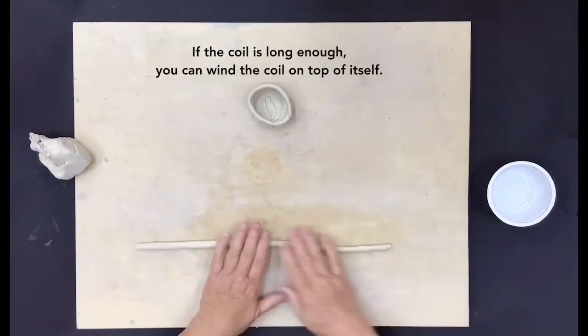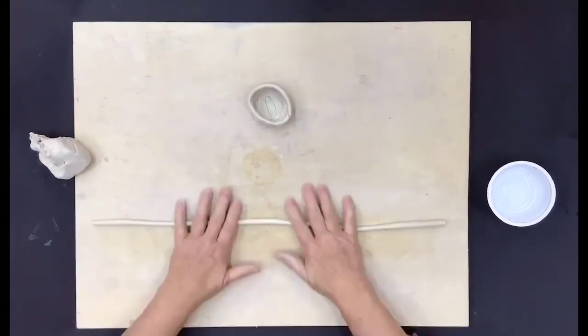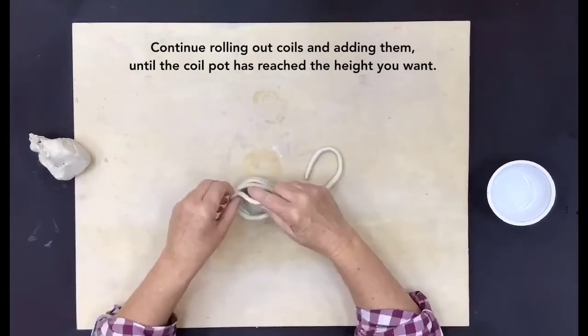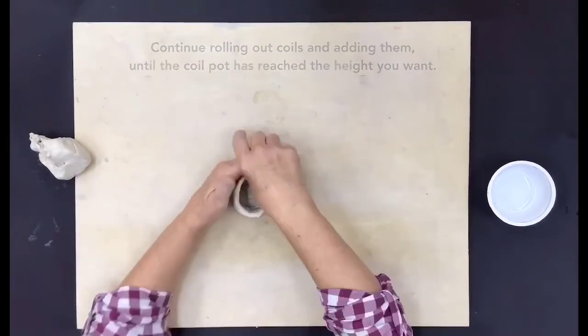If the coil is long enough, you can wind the coil on top of itself. Continue rolling out coils and adding them until the coil pot has reached the height you want.